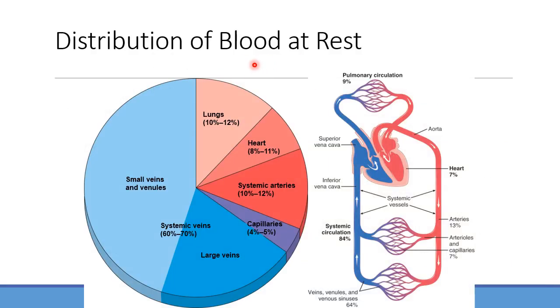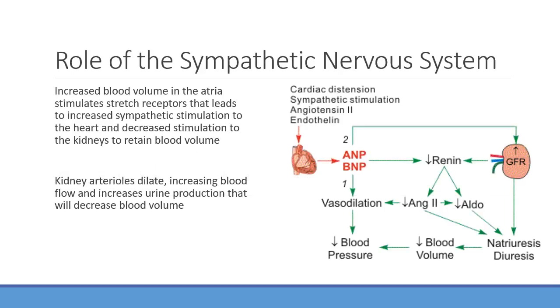At rest, blood distribution changes over time because the body can shunt blood to different areas based on activity level. We want to pump blood to wherever is most active at a given time. Most of the blood should be in large veins, small veins, and venules — again, about two-thirds in the venous side at any time.